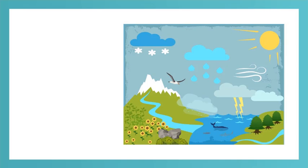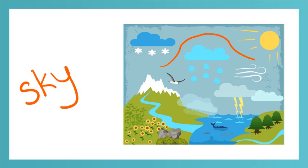Let's start by looking at the things in the sky. Wait a minute first. What is the sky? Do you see the sky? It's right here, all around. Spell the word sky with me. S-K-Y. Sky.